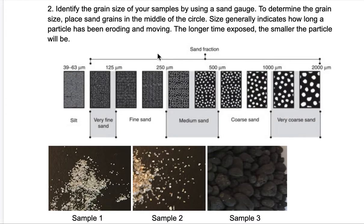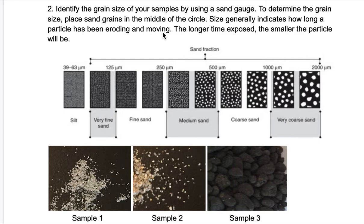For number two, you're going to identify the grain size of your samples by using a sand gauge. To determine the grain size, place the sand grains together on your lab table so you can see them together. Size generally indicates how long a particle has been eroding and moving — the longer the time exposed, the smaller the particle will be.